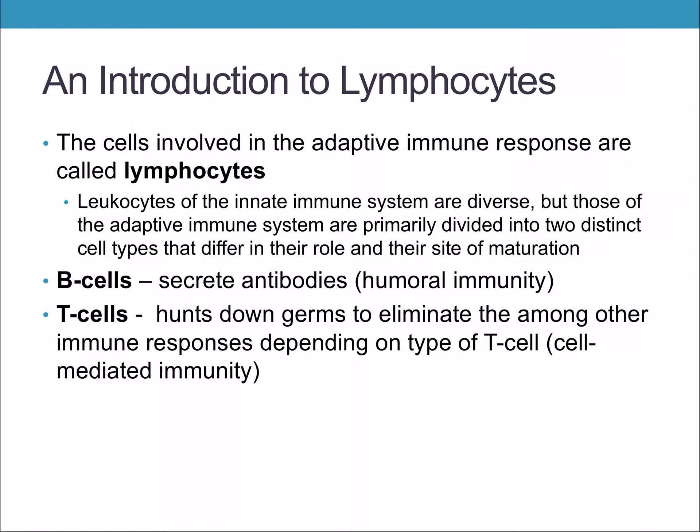B cells, which mature in the bone marrow, secrete antibodies, and we call that humoral immunity. T cells, which become immunocompetent in the thymus, are part of your body's cell-mediated immunity — that hunts down pathogens and eliminates them, along with other immune responses depending on the type of T cell.